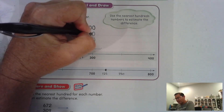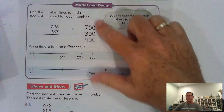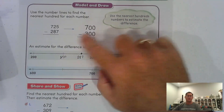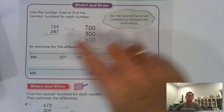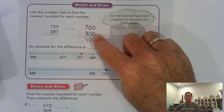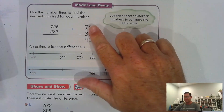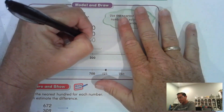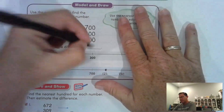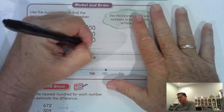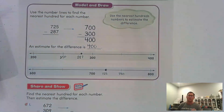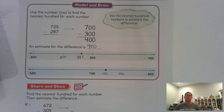Now that we've identified which hundreds these numbers are closer to — 700 take away 300 equals 400. So the difference is about 400. An estimate is about 400.